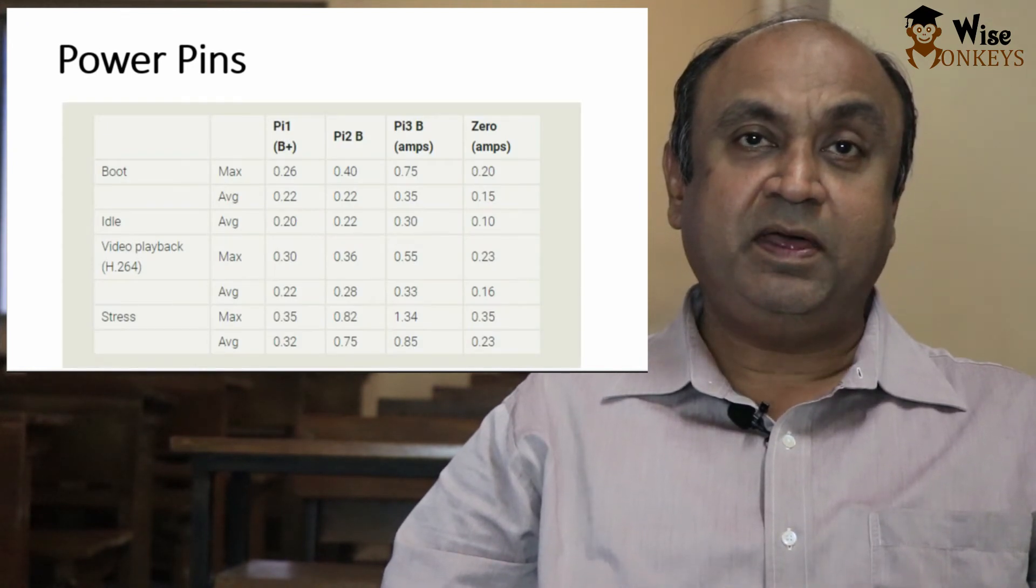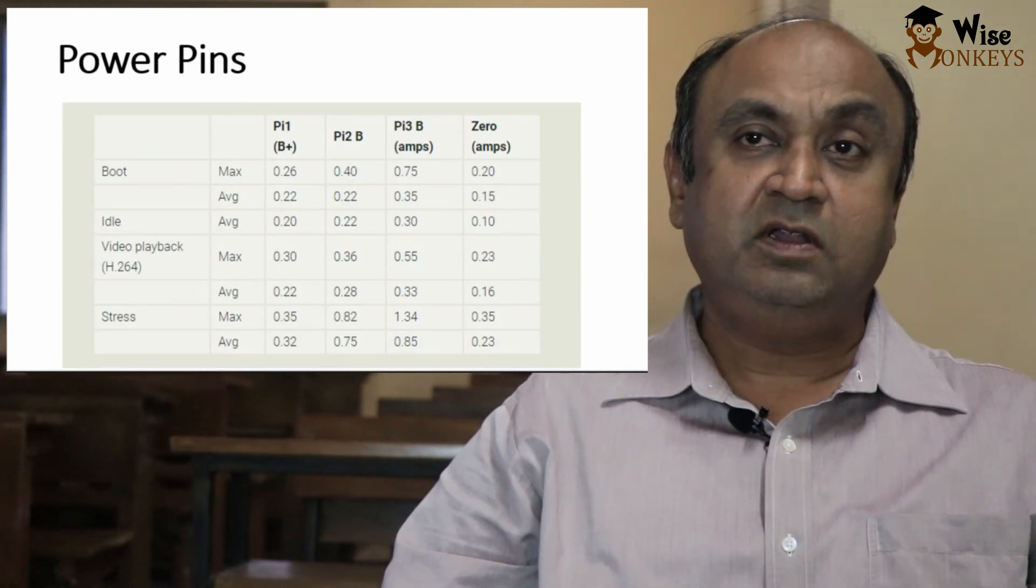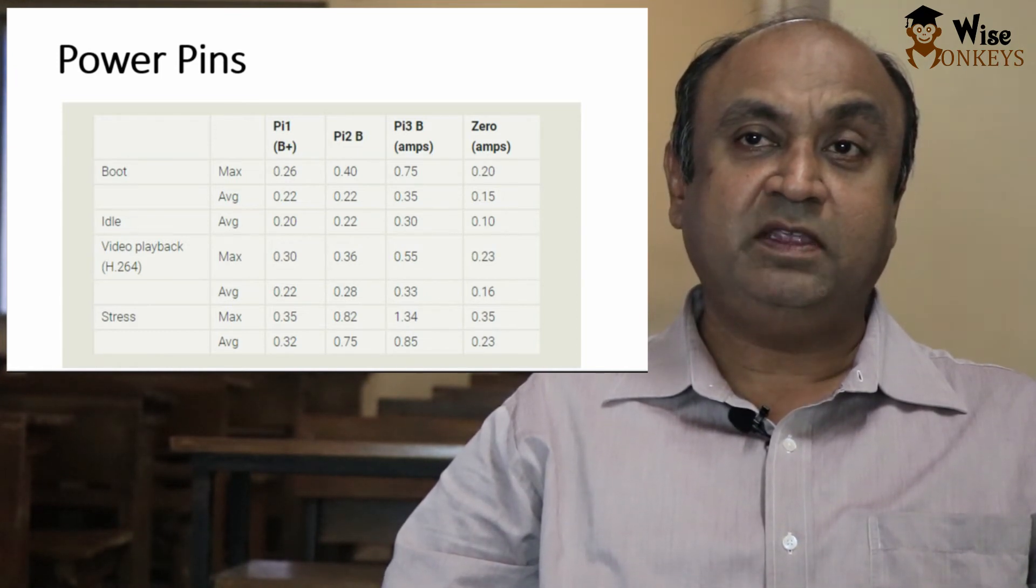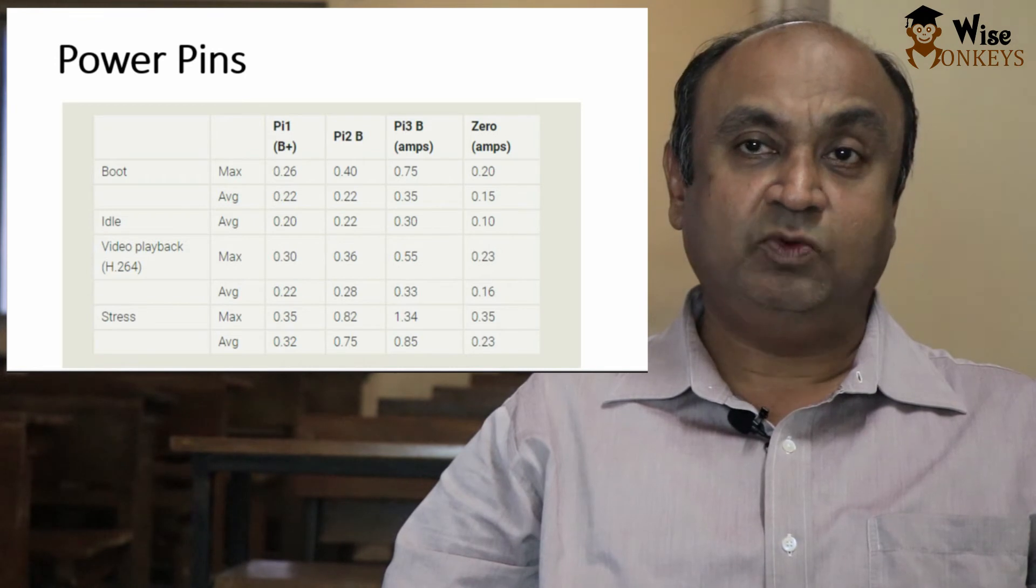This is the comparison of the power drawn by different models of Raspberry Pi. Pi 1B plus, Pi 2, Pi 3B and Pi 0.